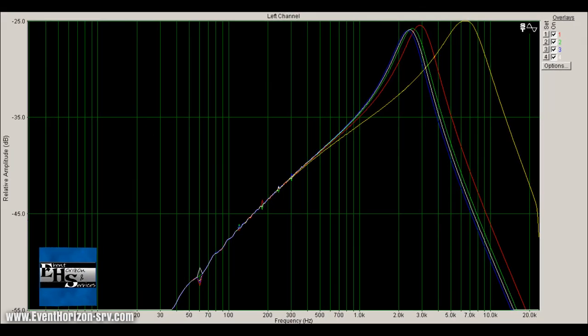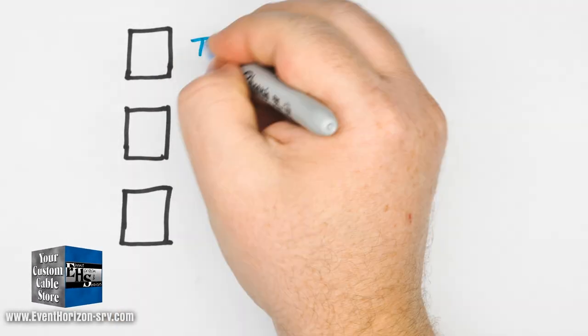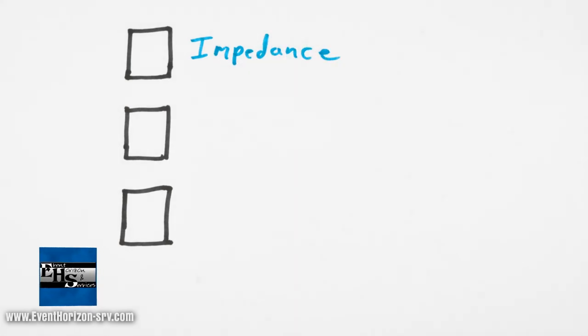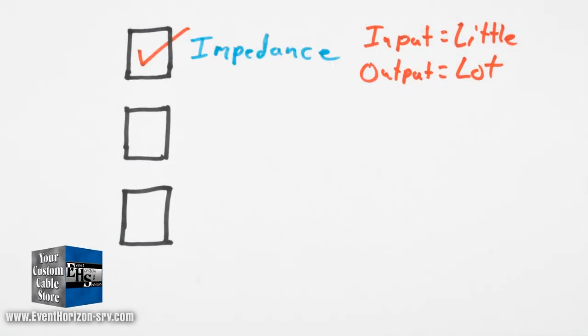All right, that completes the test for this video. To summarize: input and output impedance regarding tone and cable length. The input impedance has little effect, but the output impedance has a large effect. The higher the output impedance, the more high end loss you will see with longer cables.